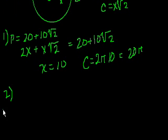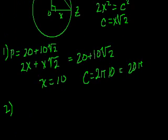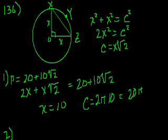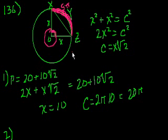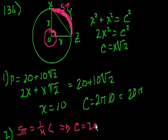Statement 2: the length of arc XYZ is 5π. The right angle at O is 90 degrees, which is one-fourth of 360 degrees, so the arc XYZ is exactly one-fourth of the full circumference. Therefore, 5π = (1/4) × circumference, meaning the circumference equals 20π. Each statement independently is sufficient to answer the question.